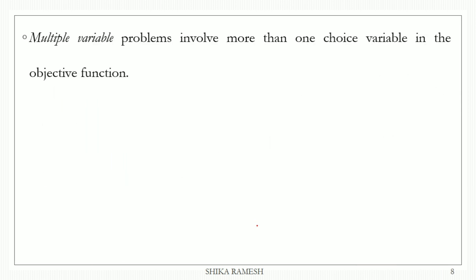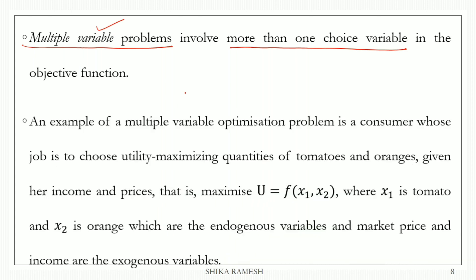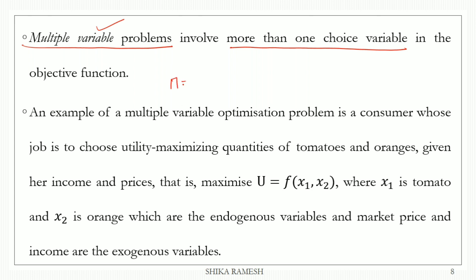That brings us to multiple variable problems. For multiple variable problems, you use an objective function with more than one variable. We call the single variable problem pi = f(q) with one choice variable. Now, a multiple variable problem is U = f(x1, x2), where there are two choice variables. For example, x1 is tomatoes and x2 is oranges.